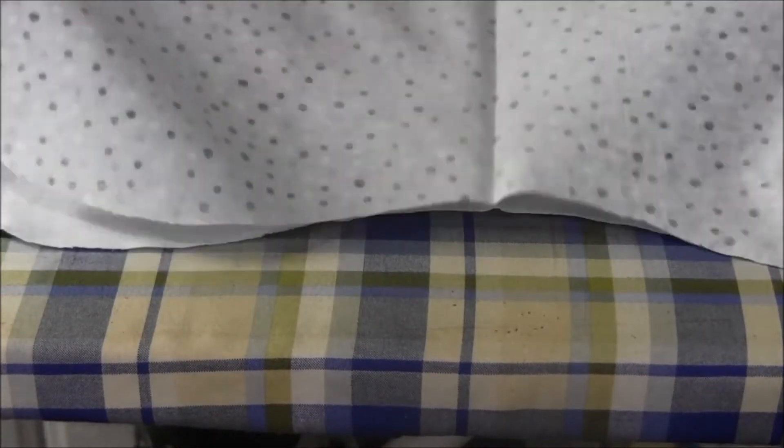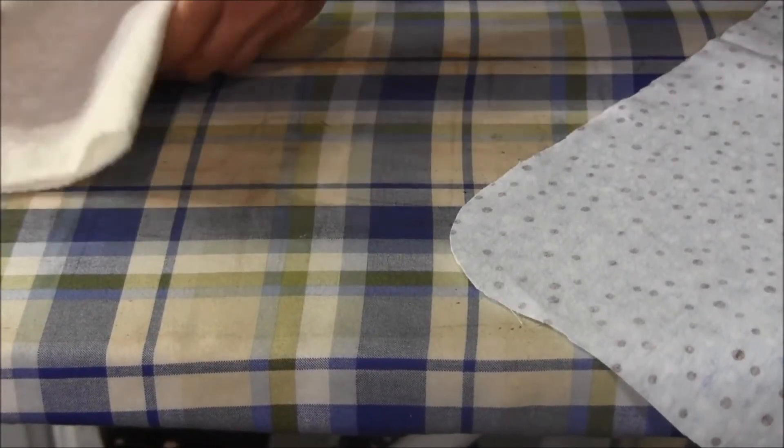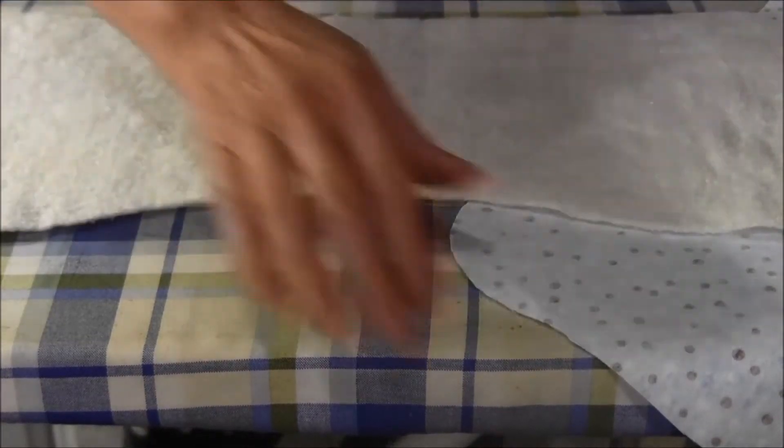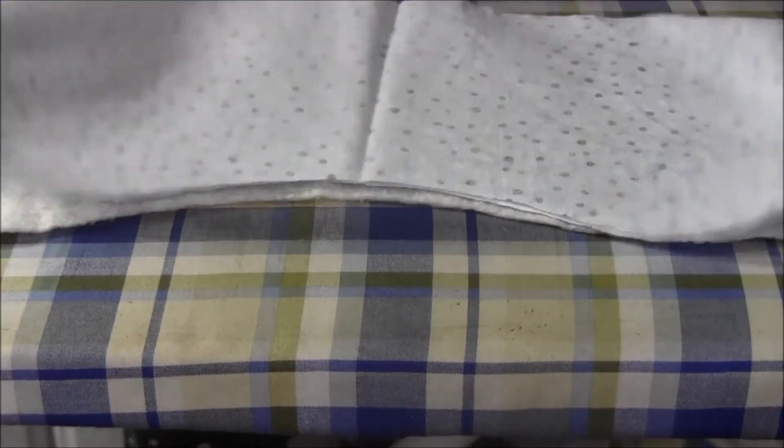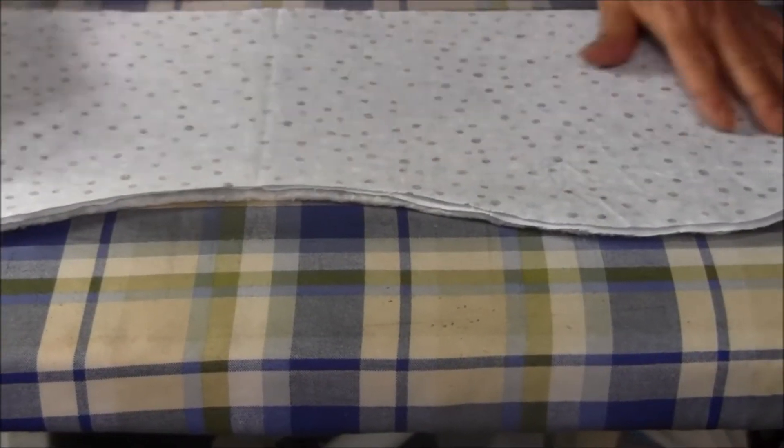If you're using the batting, place the batting on the flat surface, then put your two flannel pieces on top and pin it all the way around.